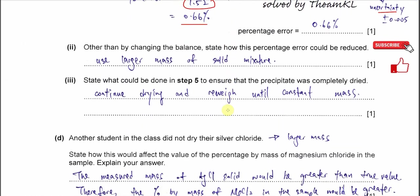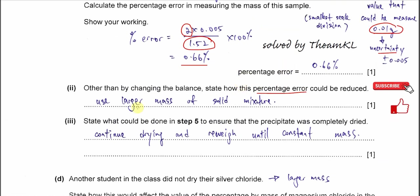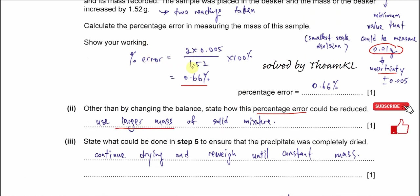Part C2: other than changing the balance, how could the percentage error be reduced? We use a larger mass of the solid mixture. As you can see from the calculation, if the mass in the denominator is larger — say 2.52 g instead of 1.52 g — then the percentage error becomes lower. So to improve accuracy and reduce percentage error, use a larger mass of the solid mixture.